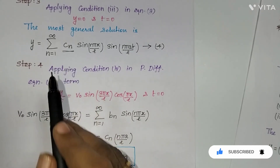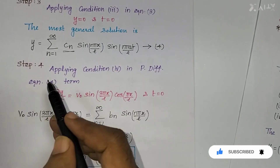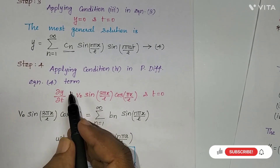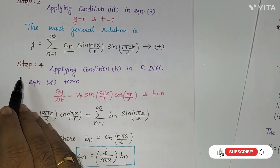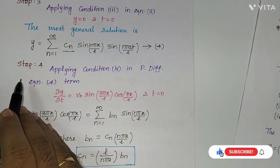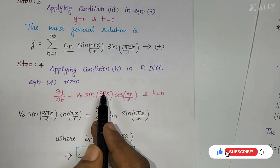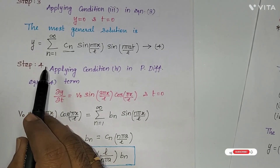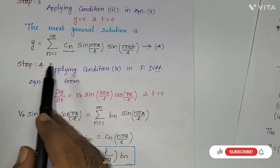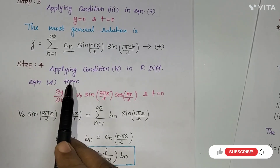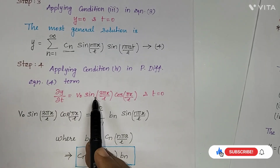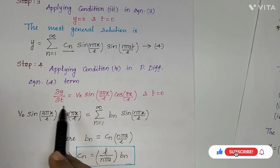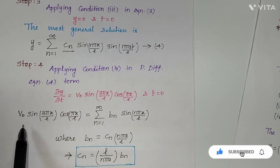In step 3, we directly substitute condition 3 into equation 3. We get the most general solution: y = Σ(n=1 to ∞) cn·sin(nπx/L)·sin(nπat/L), which is equation 4. In step 4, we apply condition 4, but we cannot apply it directly — we must first partially differentiate equation 4 with respect to t, then apply condition 4.